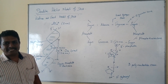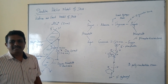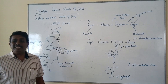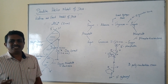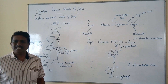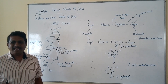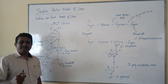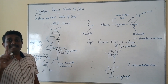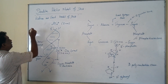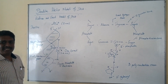The two strands are coiled in a right-handed manner like a spirally twisted staircase or ladder. Because of this right-handed spiral manner, the DNA is dextrorotatory in nature.